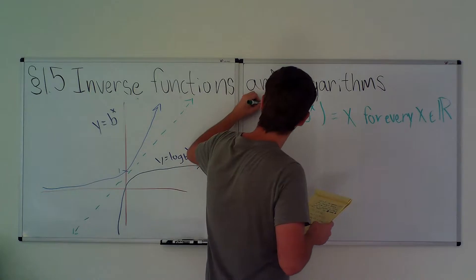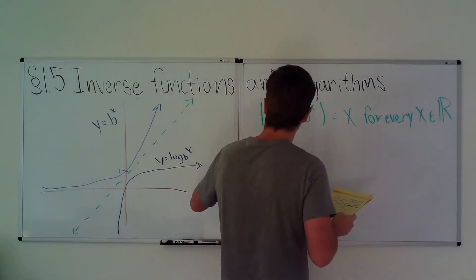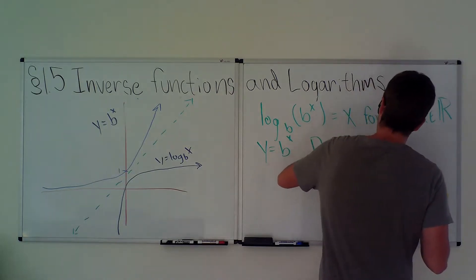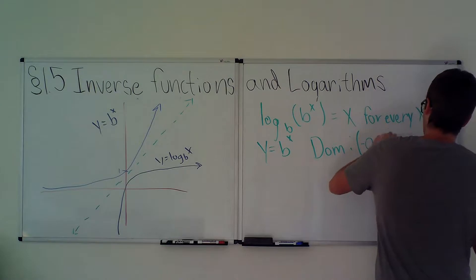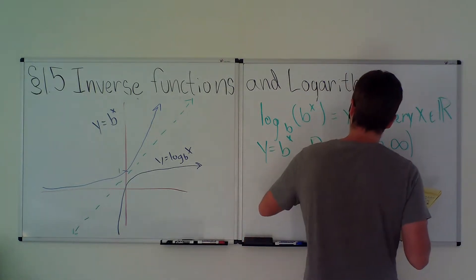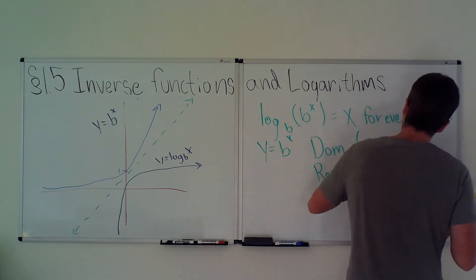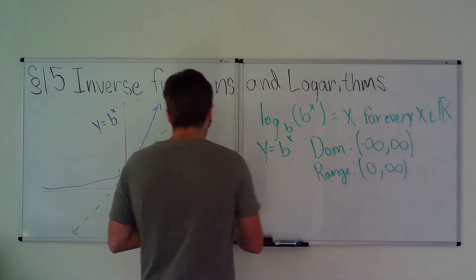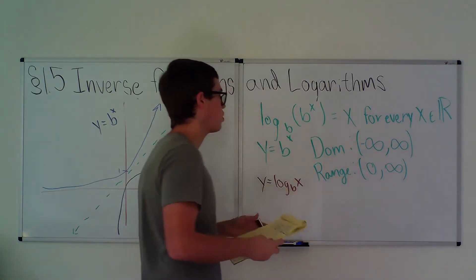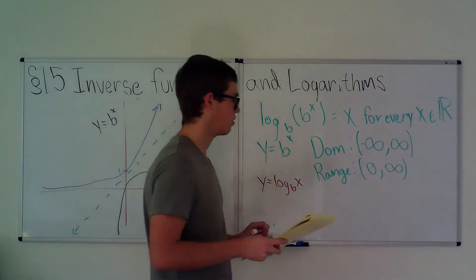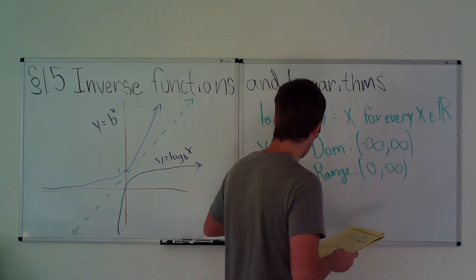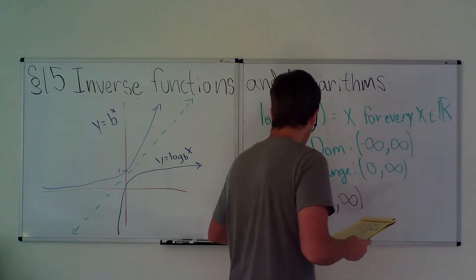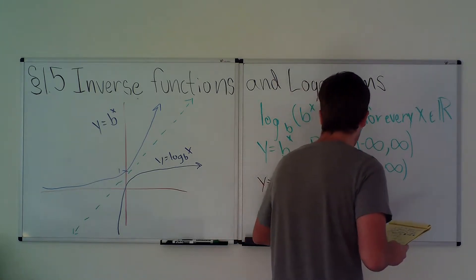Now onto the domains and ranges. For y = bˣ, the domain is all of ℝ, from negative infinity to positive infinity, and the range is from 0 to infinity. For y = log_b(x), since inverse functions swap domain and range, the domain is from 0 to infinity and the range is from negative infinity to infinity.